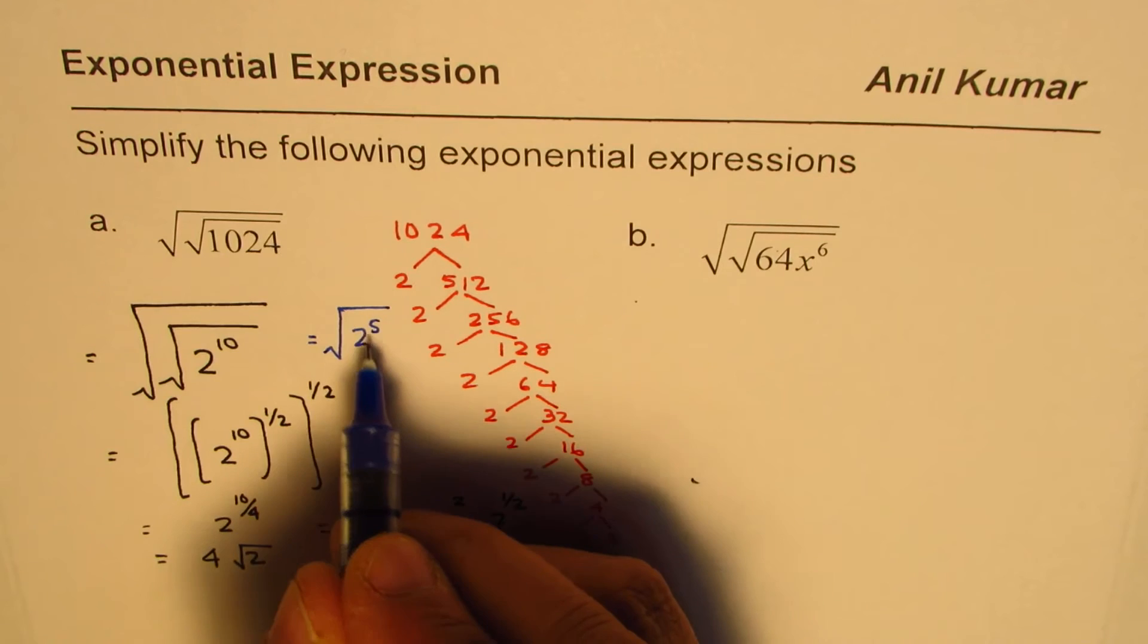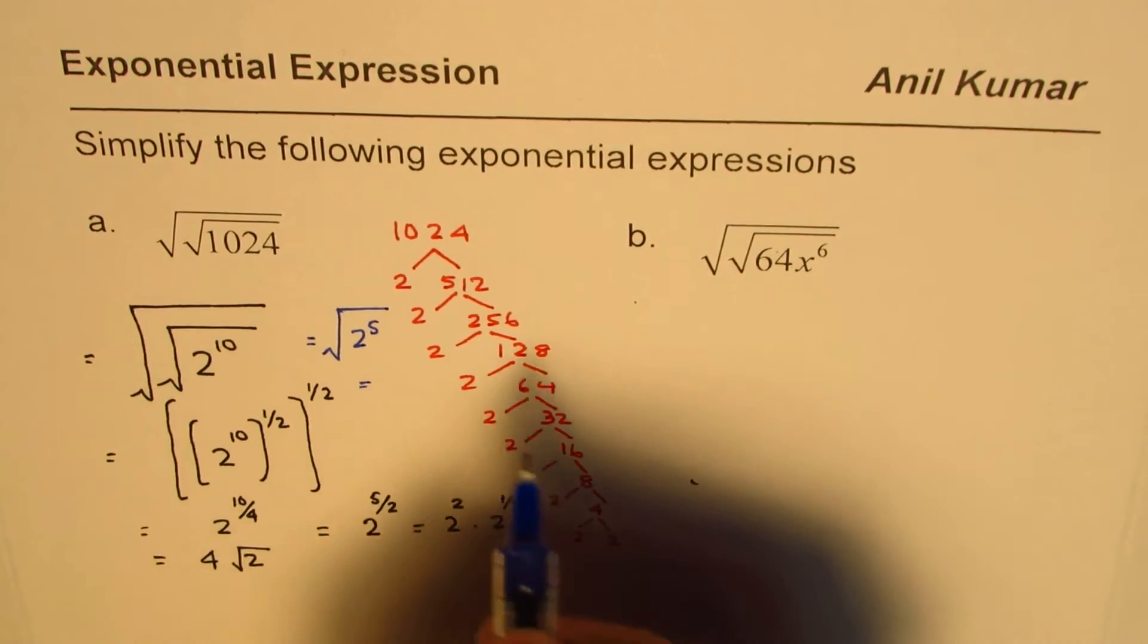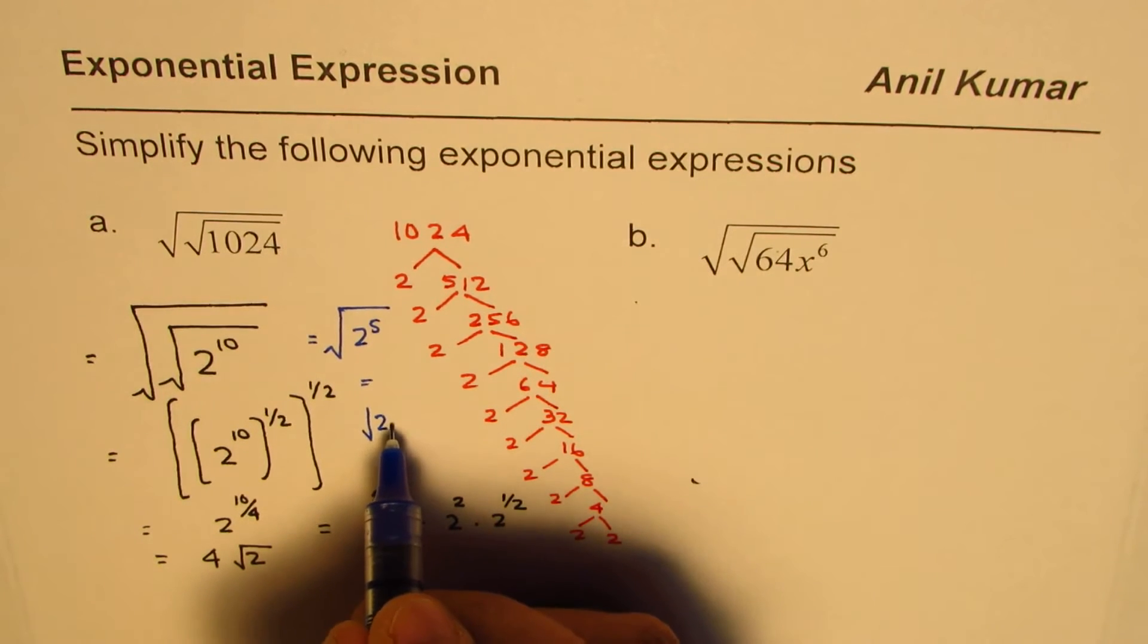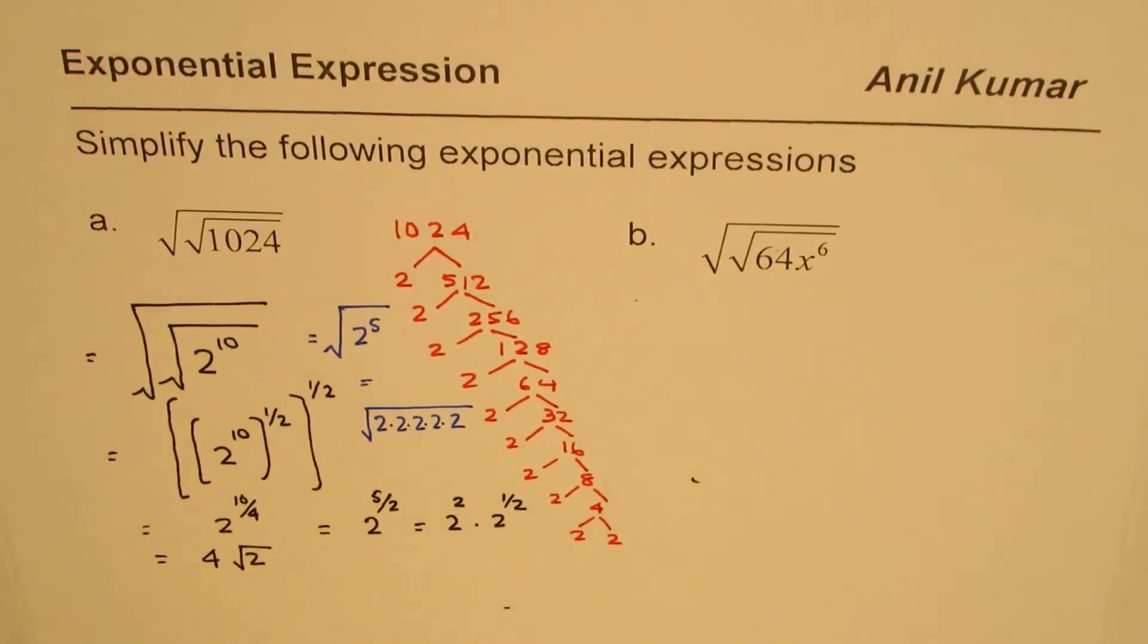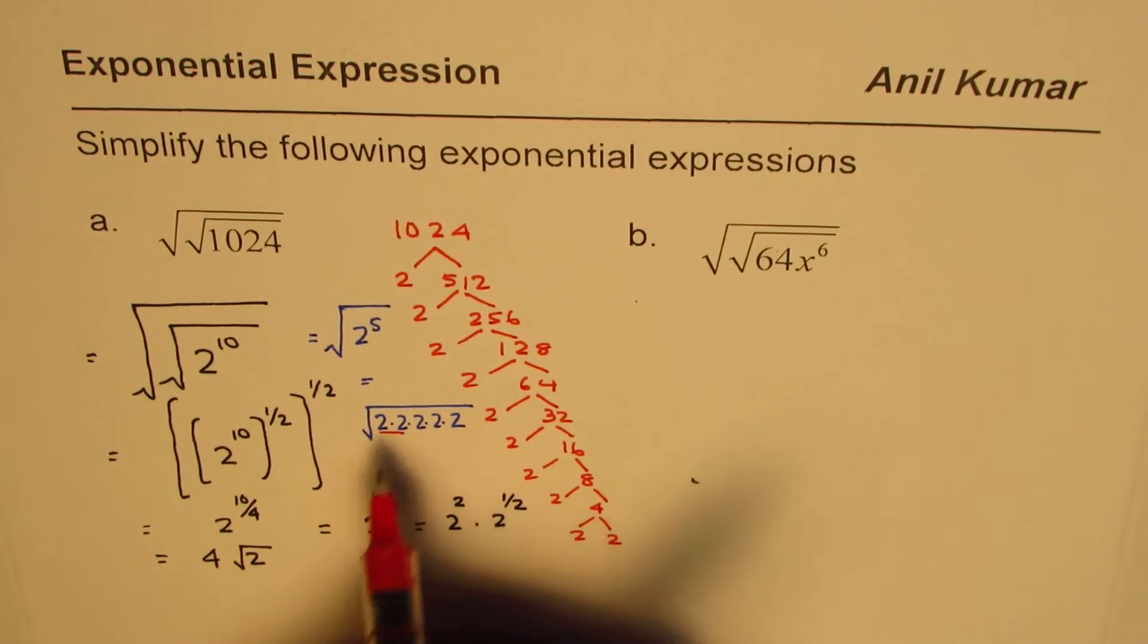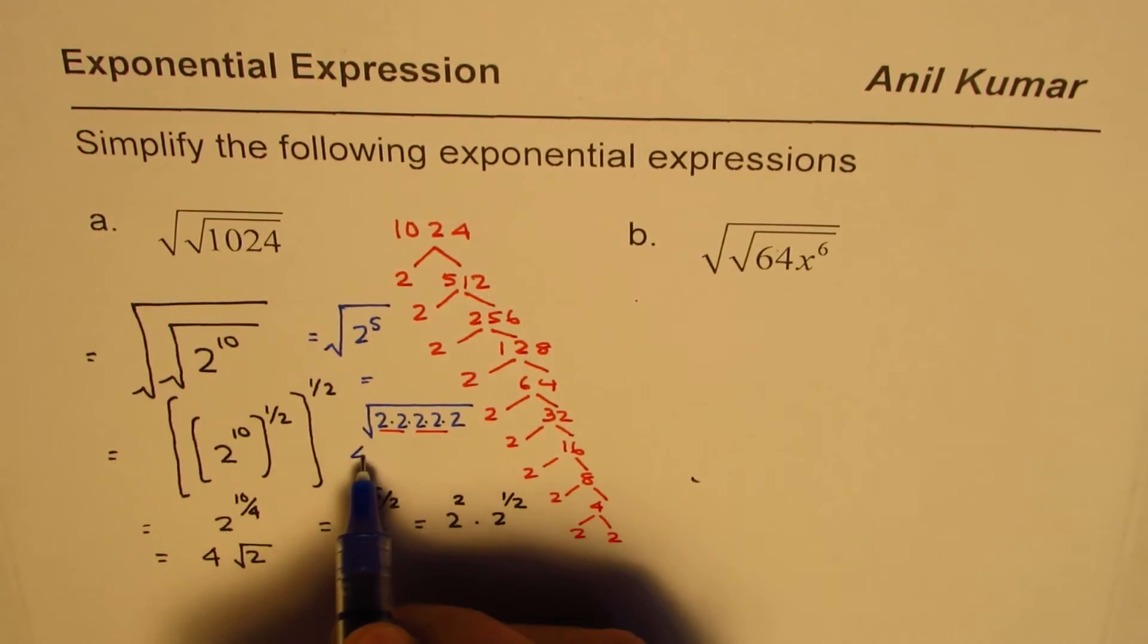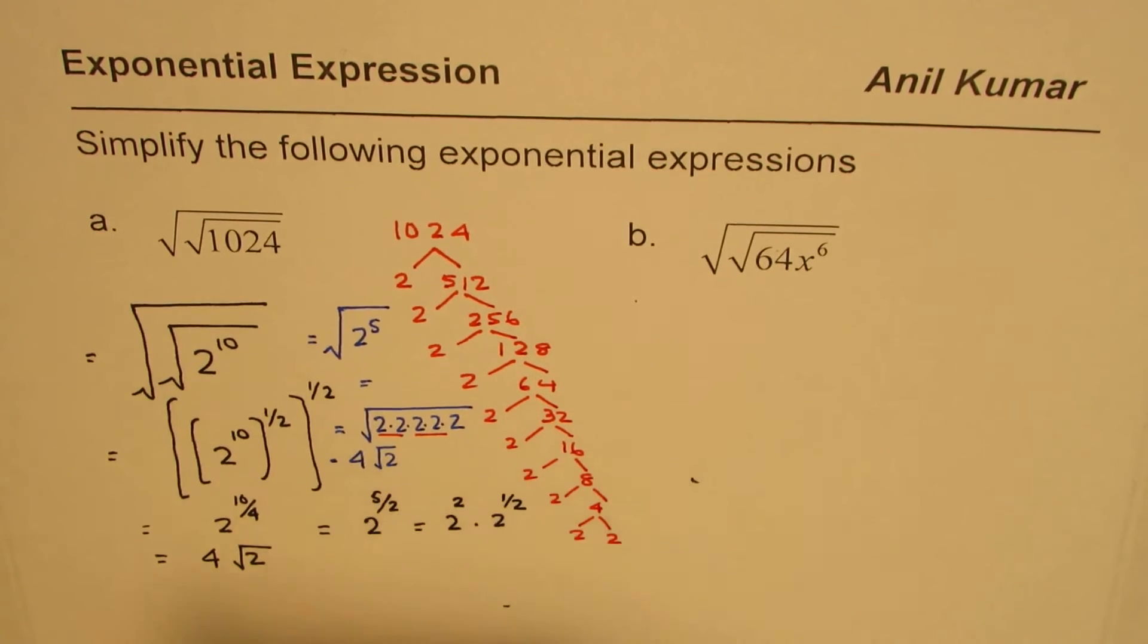2 to the power of 5 means you have 5 twos. So 4 of them can be combined: 1, 2, 3, 4, 5. You can combine 4 of them, so this makes one pair and the other one. So it becomes 2 times 2 outside, which is 4 square root 2. So this could have been another way of solving the same exponents using the power rule or your concept.